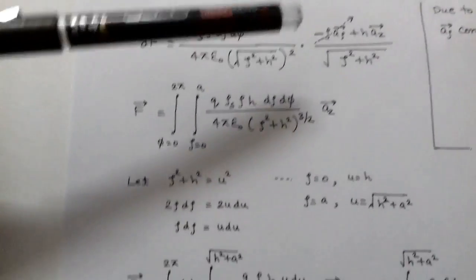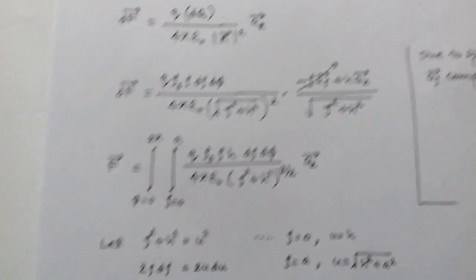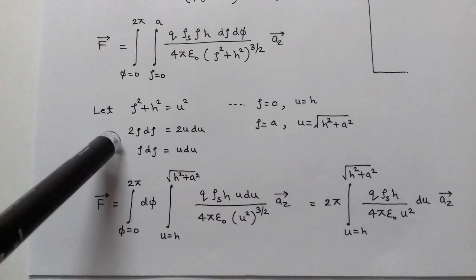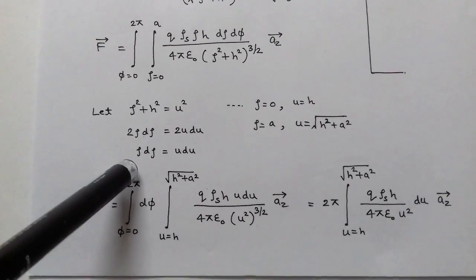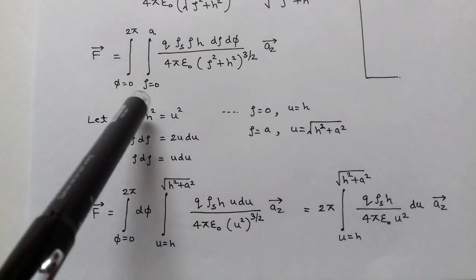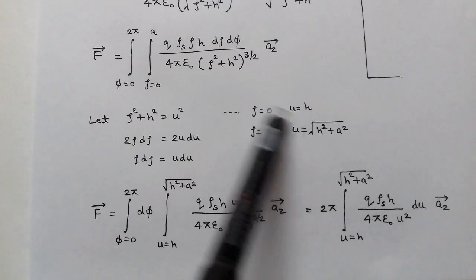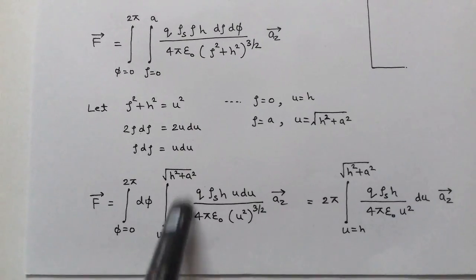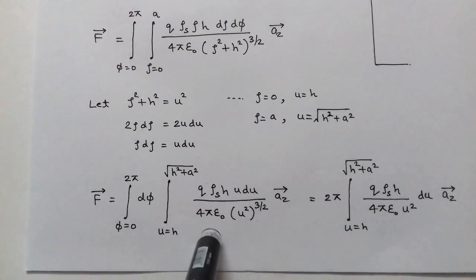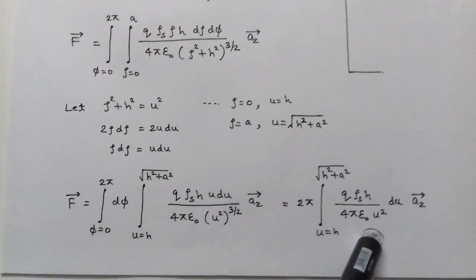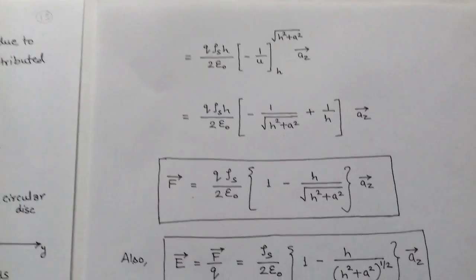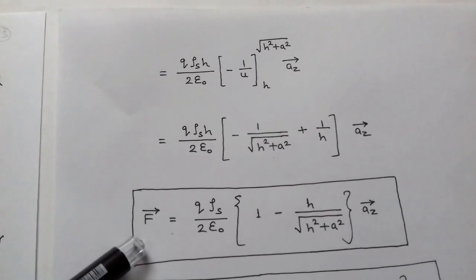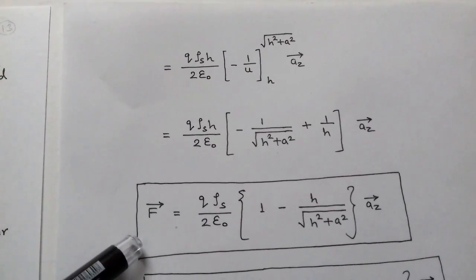We assume ρ² + h² = u² to calculate the integration. Then 2ρ dρ = 2u du, so ρ dρ = u du. The limits change: when ρ = 0, u = h; when ρ = a, u = √(h² + a²). After putting these values and evaluating, we get the total force F = q · ρs/(2ε₀) · [1 − h/√(h² + a²)] â_z.